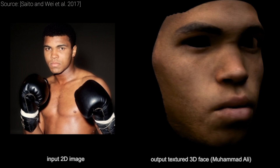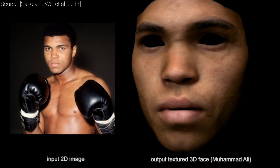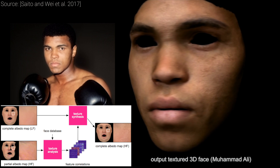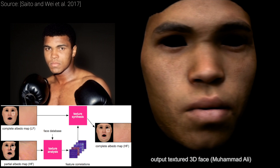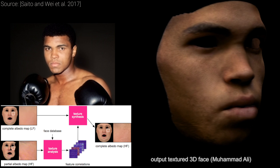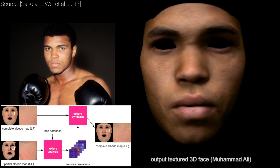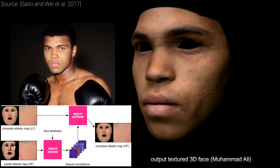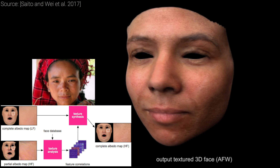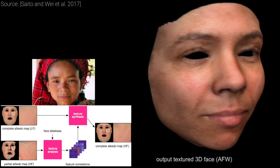And now, feast your eyes on these incredible results! After taking a photograph, this technique creates two albedo maps. One is a complete, low-frequency map which records the entirety of the face, but only contains the rough details. The other albedo map contains finer details, but in return, is incomplete.